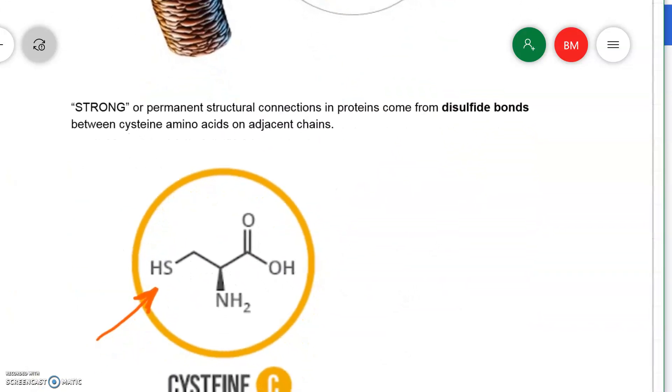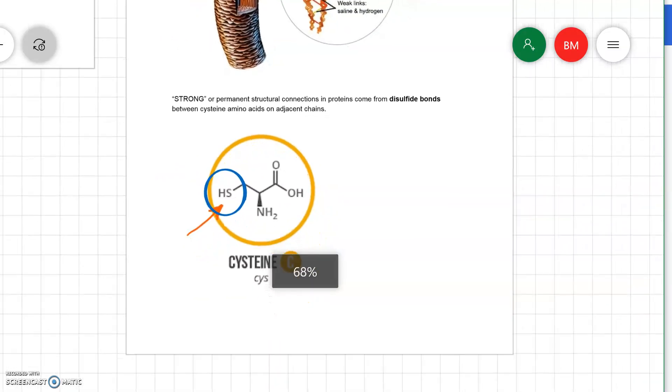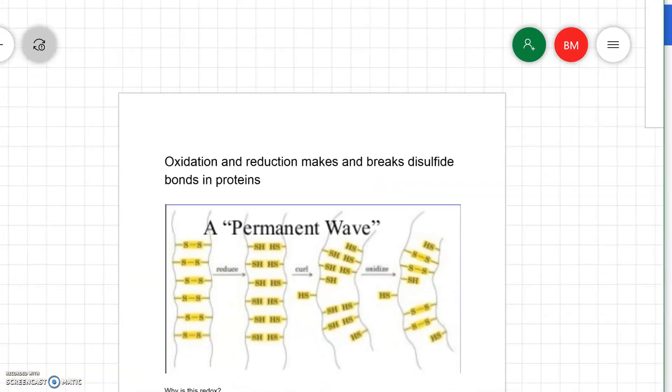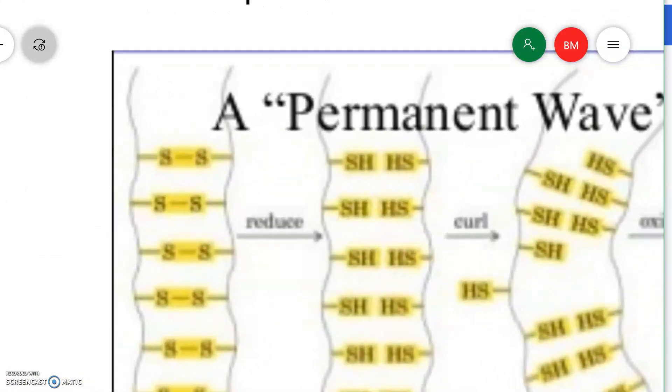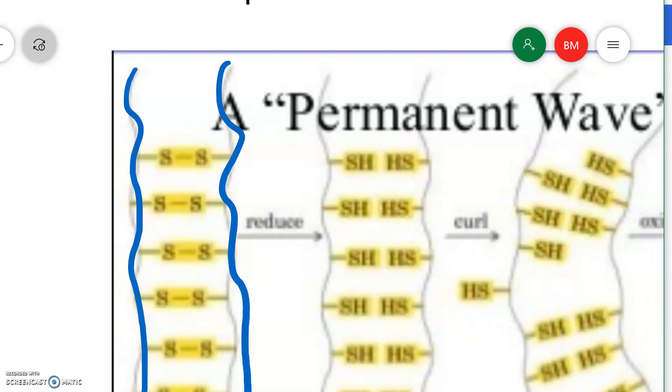The strong permanent reactions are disulfide bonds and they happen between cysteines because cysteine contains this functional group called a sulfide group or sometimes a thio group. This picture is showing us two adjacent protein chains that have cysteines near them and the sulfurs on each of them can actually join up and this makes a permanent bond between these two chains.